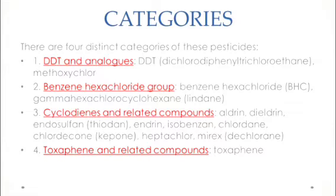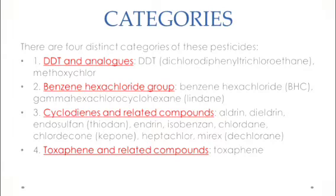The third category is cyclodienes and related compounds. This includes aldrin, dieldrin, endosulfan (also known as thiodan), endrin, isobenzone, chlordane, chlordecone (also called kepone), heptachlor, and mirex (also called dechlorane).